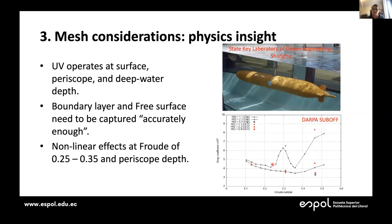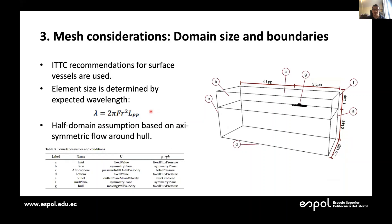There are non-linear effects when the submarine operates close to the free surface. The Type 209 real submarine needed its speed sensor to work in all conditions, so we needed to capture the physics at surface, periscope, and deep water conditions. We also needed to ensure our mesh was good enough to capture all gradients generated by the boundary layer and the free surface.